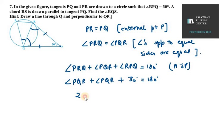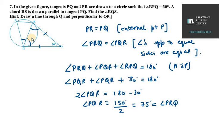So this will be twice angle PQR equals 180 minus 30 degrees. 180 minus 30 is 150, and dividing by 2 gives us 75 degrees. So angle PQR is 75 degrees and angle PRQ is also 75 degrees. But our main aim is to find angle RQS.